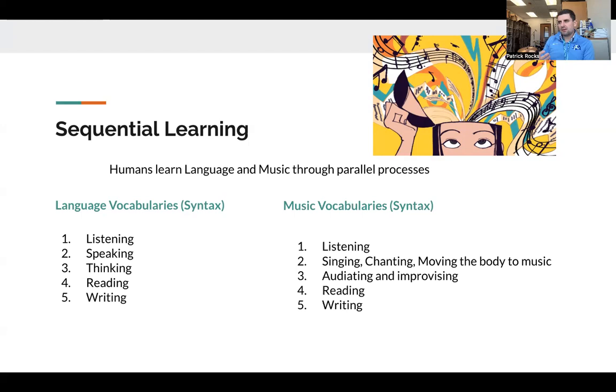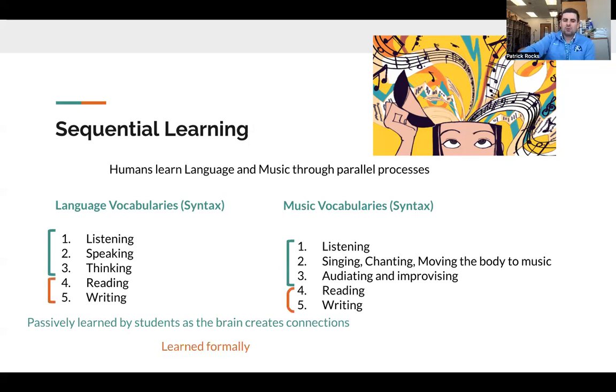Audiation is kind of the natural progression. Reading and writing become a much more high-level goal in terms of music. It is important to note that these top three Gordon suggests are kind of learned passively by a student, just accepting ideas as they come to them, accepting the musical content that's around them, and then the bottom two are more formally taught within a school context.